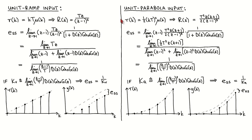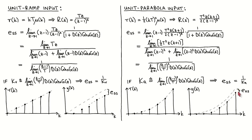The third reference input we look at is the unit parabola or constant acceleration input. The unit parabola signal is given by one half times K times T squared times Mu of K, and it can be shown that the corresponding Z transform is given by the expression in the tables. Using the result from the first page, we write the steady-state error and after applying the limit to the numerator and denominator, we get 1 divided by the limit as Z tends to 1 of (Z minus 1) squared over T squared times the loop transfer function. We define the acceleration error constant Ka accordingly, which allows us to write the steady-state error as 1 over Ka. If the output tends to a constant acceleration, then the steady-state error can be visualized as the difference shown.